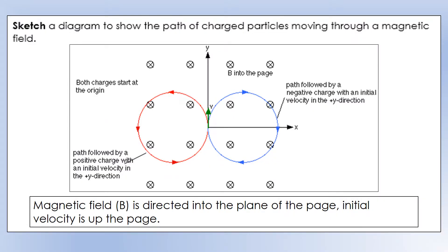If we send charged particles through a magnetic field, what we get is them moving in circles. In this scenario, the magnetic field is applied into the plane of the page, so the first finger points into the screen. The velocity of the charged particles is going up the page, so the middle finger points upwards. Therefore, the thumb points to the left, meaning a positively charged particle experiences a force to the left.